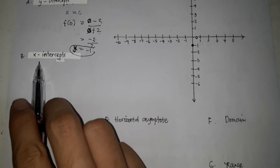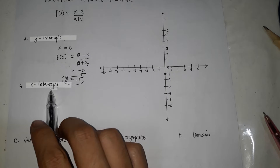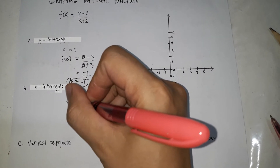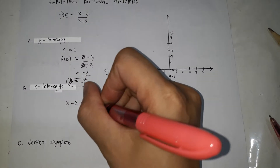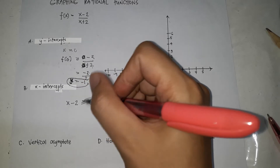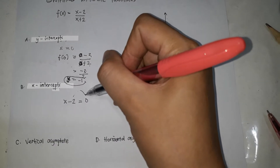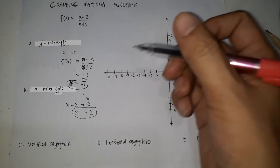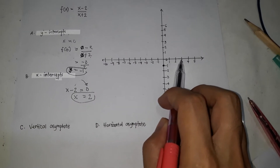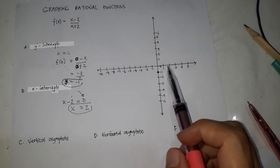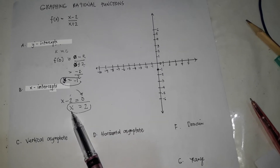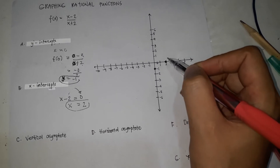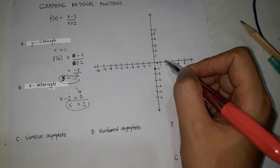Next, let's proceed with the x-intercept. To solve for the x-intercept, take the numerator x minus 2 and set it equal to 0. Transpose the 2, so x is equal to 2. That's our x-intercept — the graph passes through x equals 2 on the x-axis.